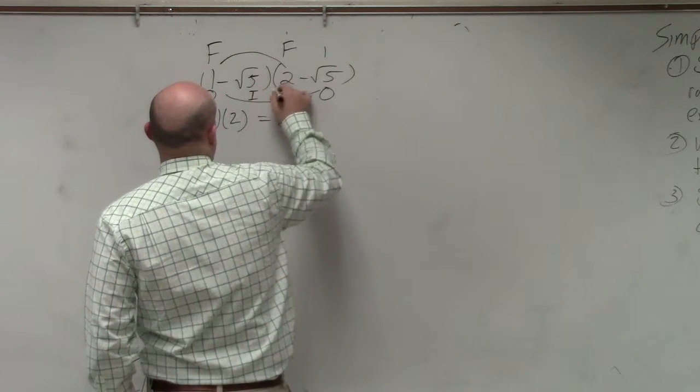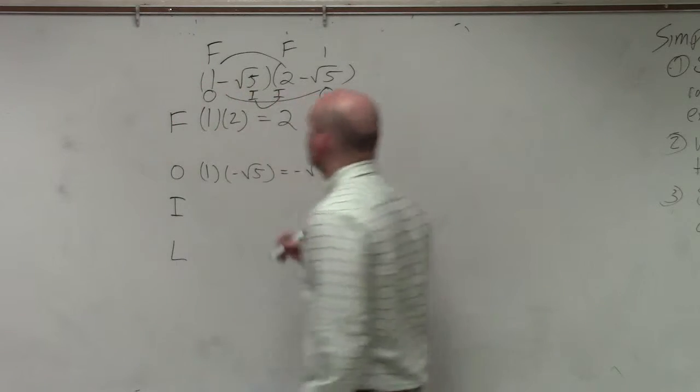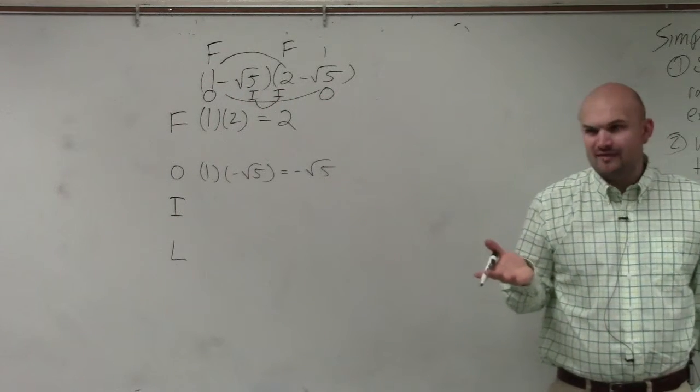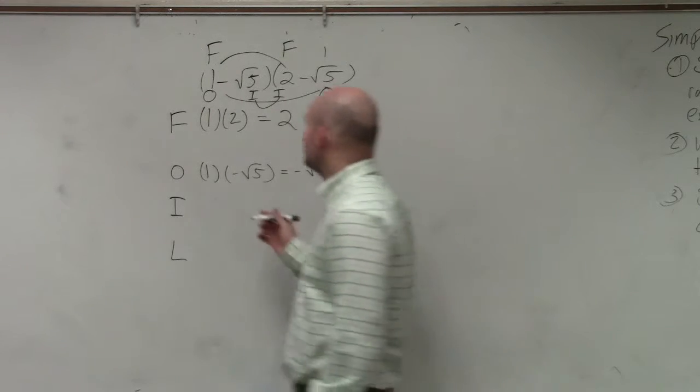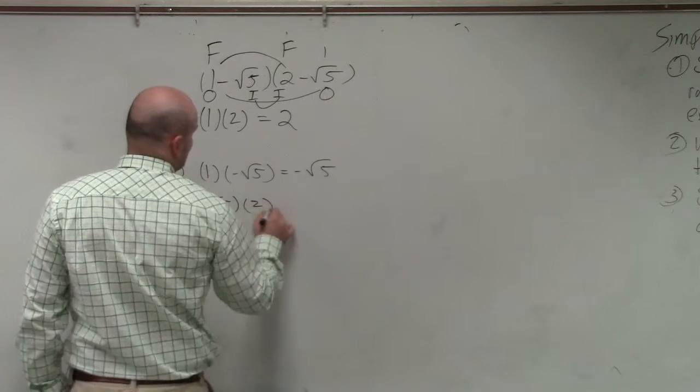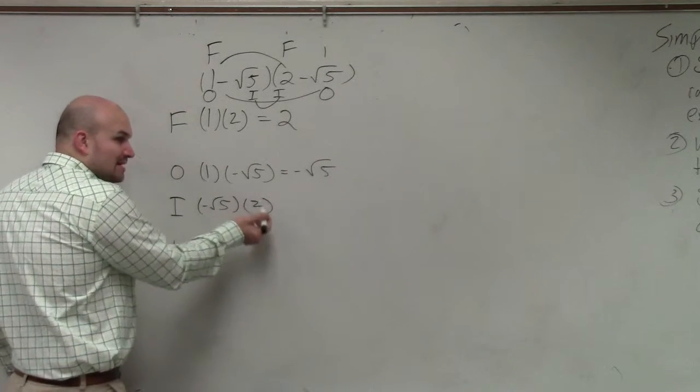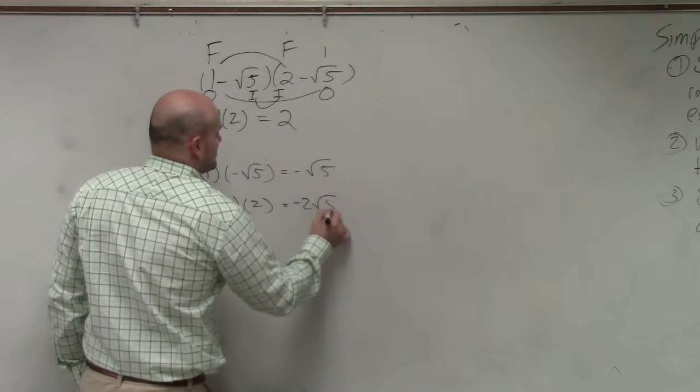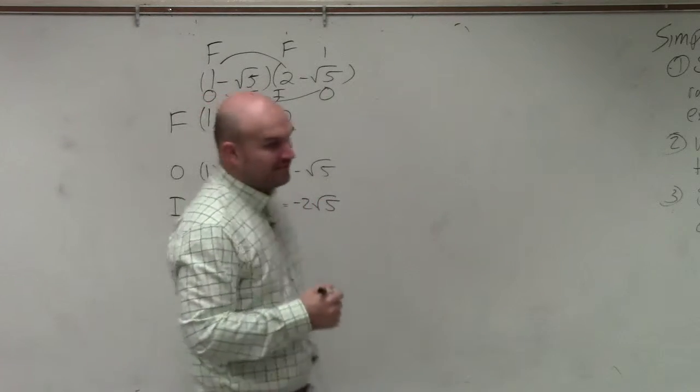Then we do the inner, which is the inner two terms. Does anybody have any questions on how FOIL works? So that one is negative square root of 5 times 2. Remember, you cannot multiply a number outside a radical with a number inside a radical, so that remains negative 2 square root of 5.